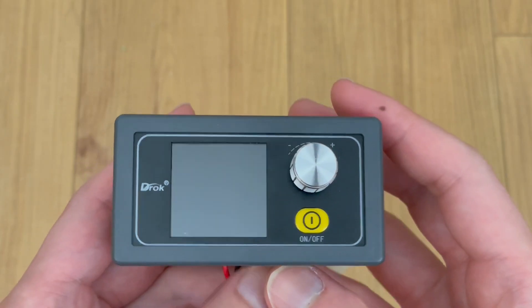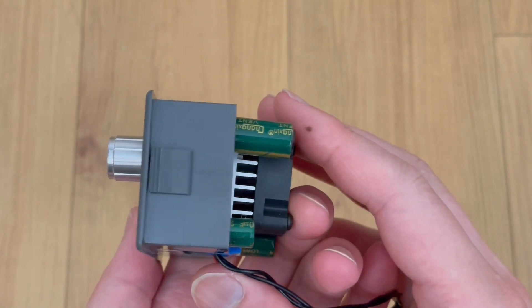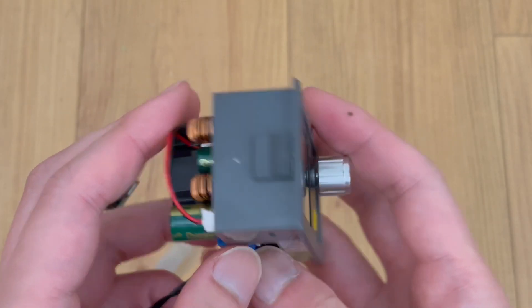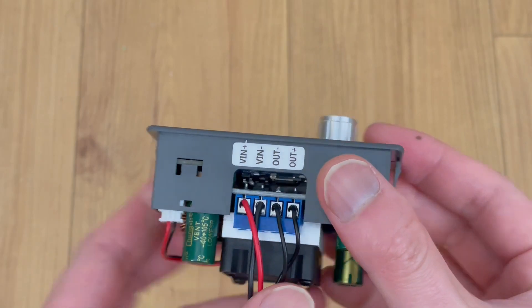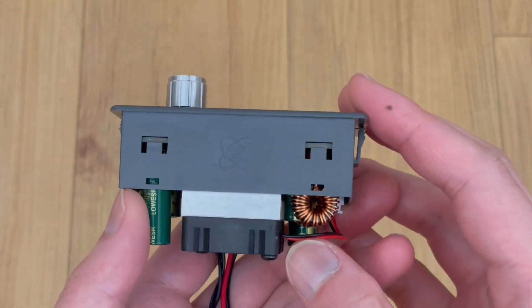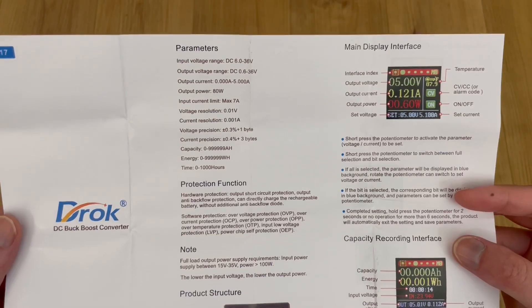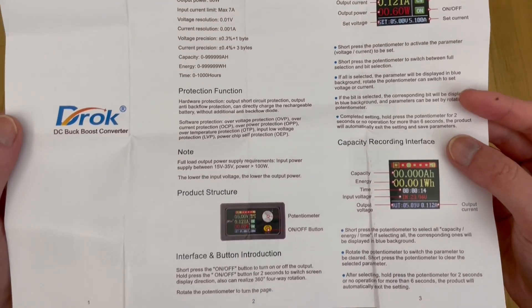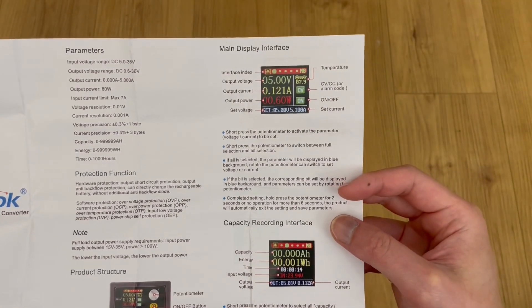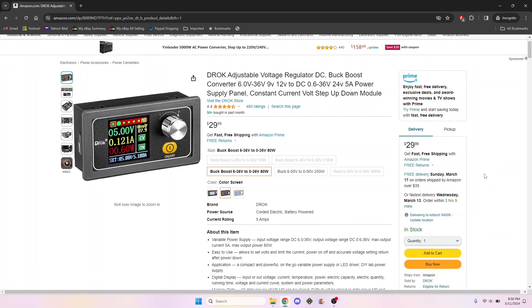As such, we decided to obtain a regulated power supply, and we were recommended this DROC unit, a DC-to-DC boost converter with an adjustable output, which goes for $30 on Amazon.